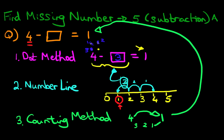How many fingers are you holding out? You should be holding out 3 fingers. To get from 4 to 1, you should be holding out 3 fingers.